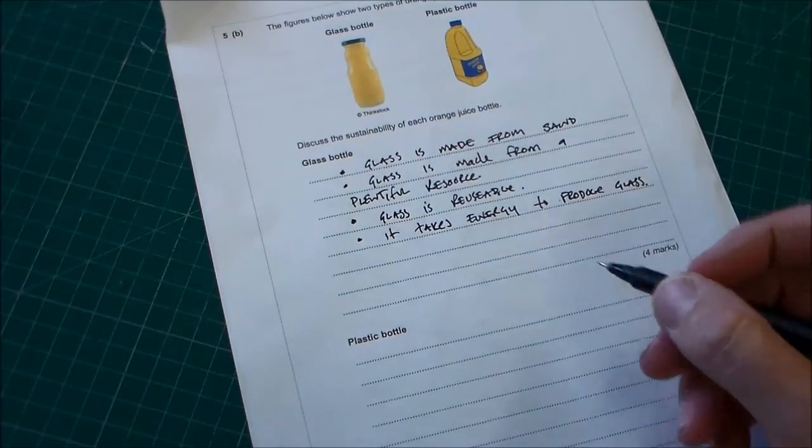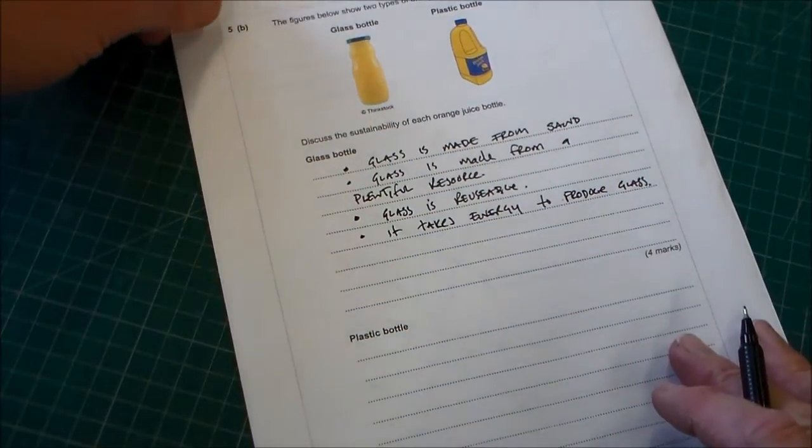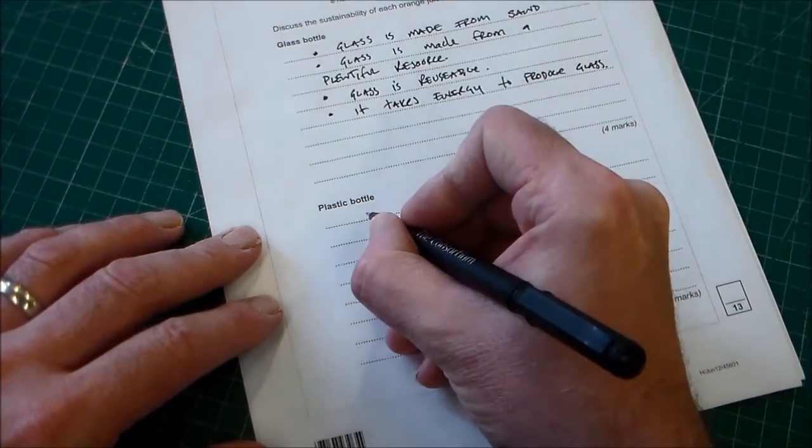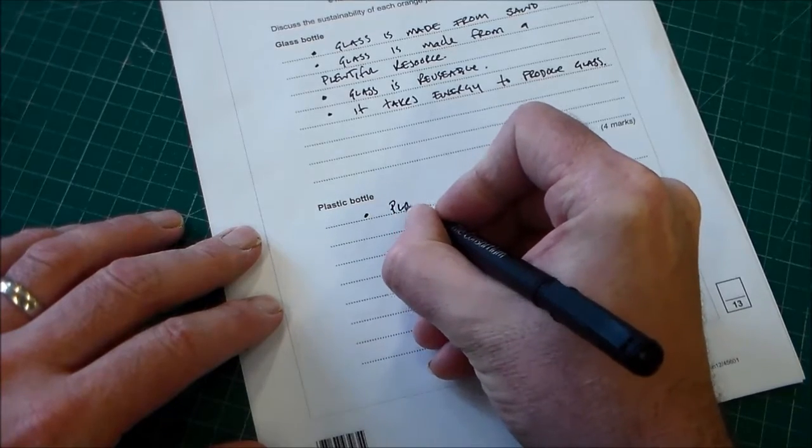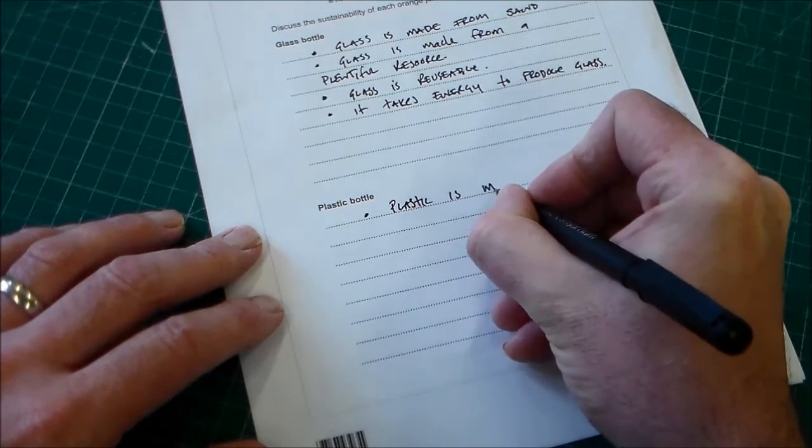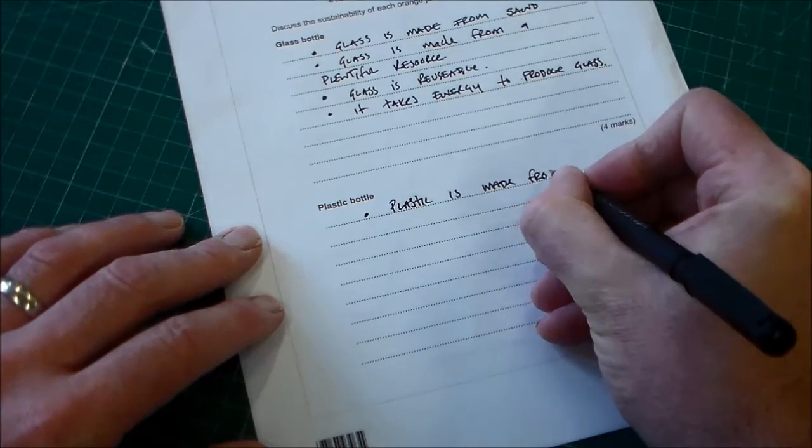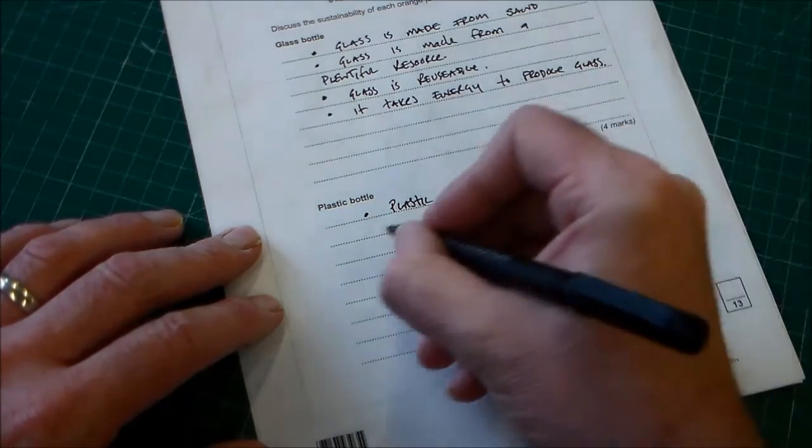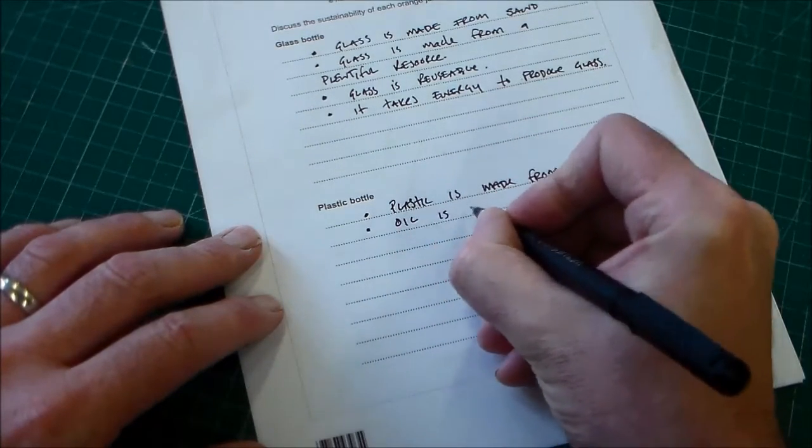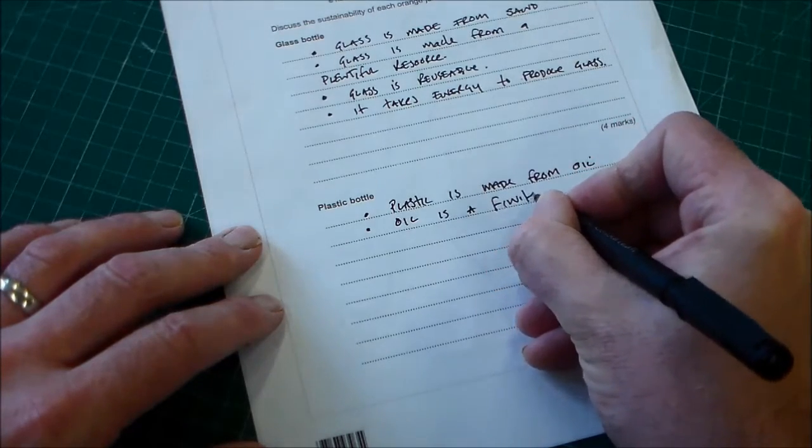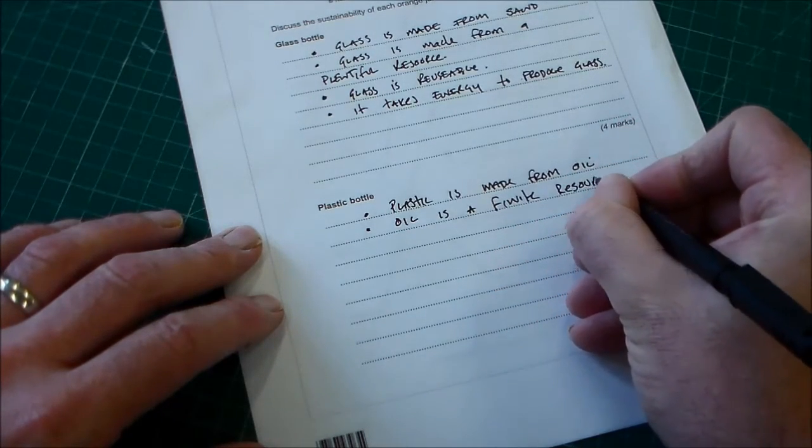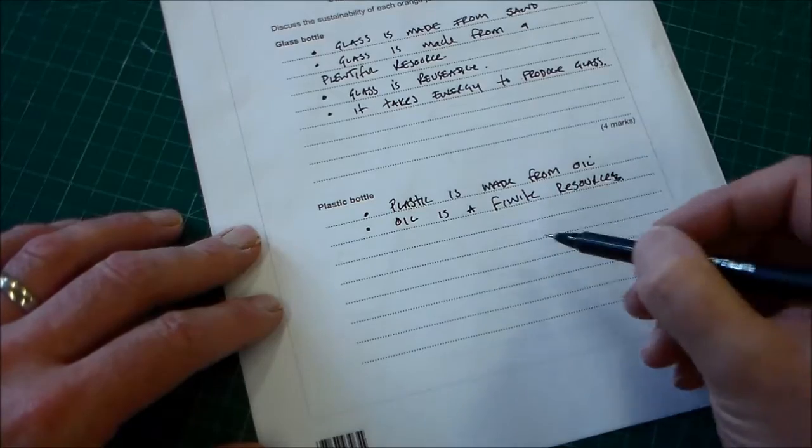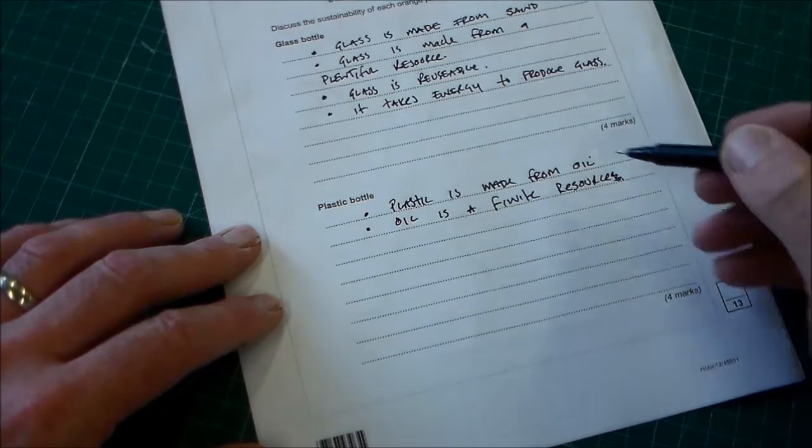Now, we're going on to plastic bottle. We're looking at the plastic bottle, and what can we say about the plastic bottle? We can say that plastic is made from oil. So that's one mark there, plastic is made from oil. And of course, oil is a finite resource. So we can say plastic is made from oil, oil is a finite resource. So that's a simple one. Anything with plastic, we can say those two. So we've got two marks there.